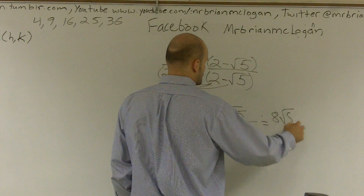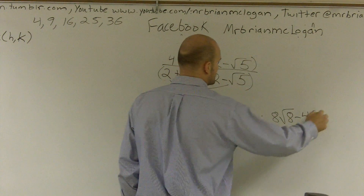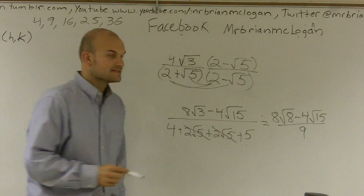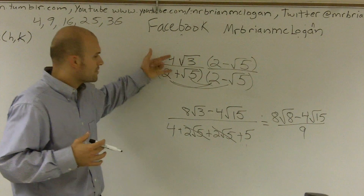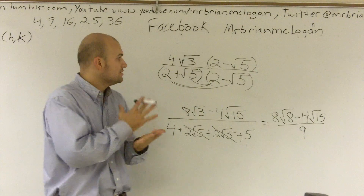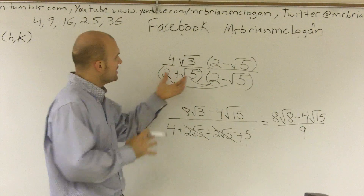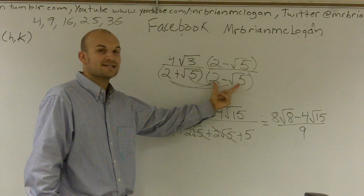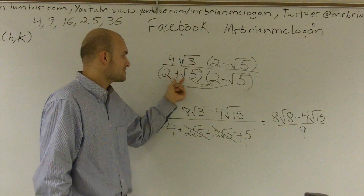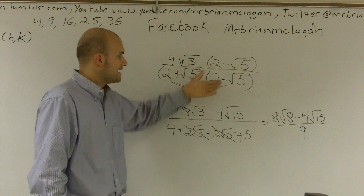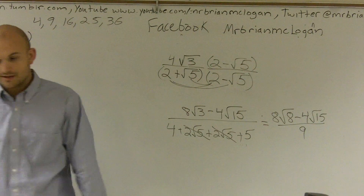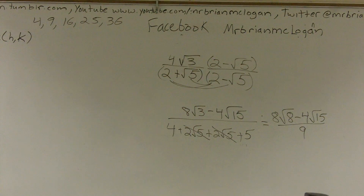So my final answer is 8 times the square root of 3, minus 4 times the square root of 15, all over 9. Just remember: whenever you have a radical on the bottom, you have to multiply by a radical to get rid of it — you cannot divide by a radical. But if it's a binomial, you have to multiply by the conjugate. If it has a plus, multiply by the same but with subtraction; if it has subtraction, multiply by the same but with addition. Make sure you do it on both top and bottom, then simplify.